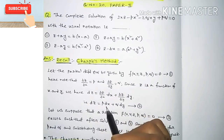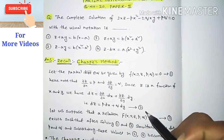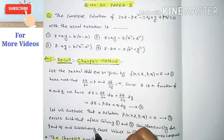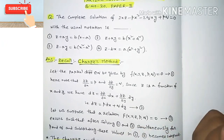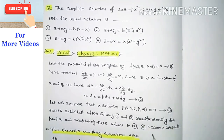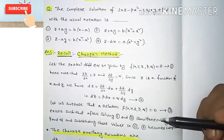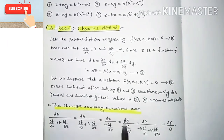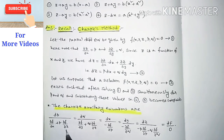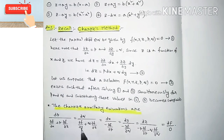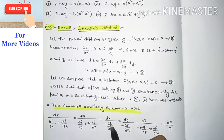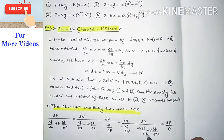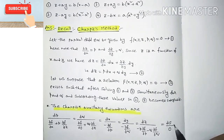That is, dz = p·dx + q·dy, let it be equation number 2. We suppose a relation F(x, y, z, p, q) = 0 exists such that after solving equations 1 and 3 simultaneously for p and q, and substituting these values in equation 2 so that equation 2 becomes integrable, then we get the solution. Charpit's auxiliary equation is given by: dp/(∂f/∂x + p·∂f/∂z) = dq/(∂f/∂y + q·∂f/∂z) = dx/(−∂f/∂p) = dy/(−∂f/∂q) = dz/(−p·∂f/∂p − q·∂f/∂q) = dF/0.